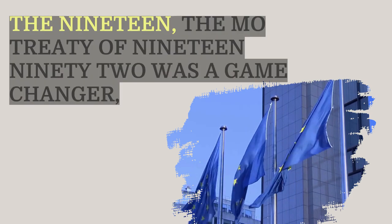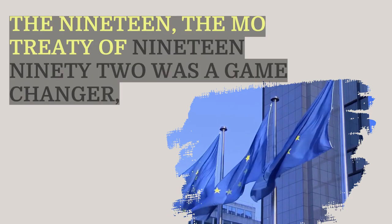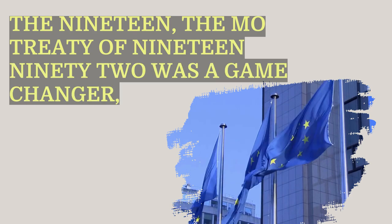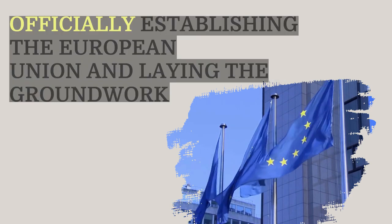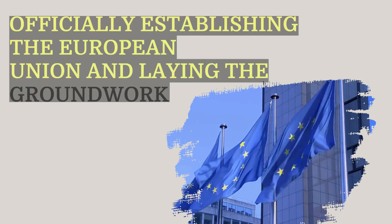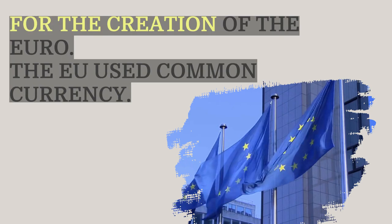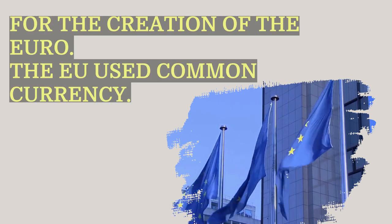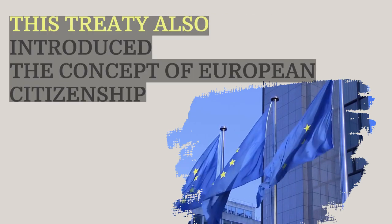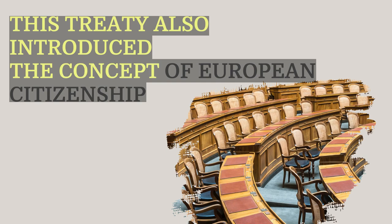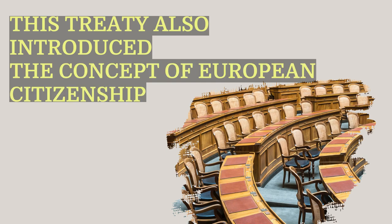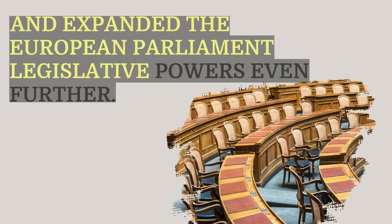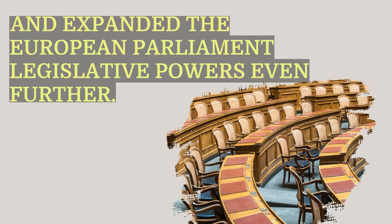In the 1990s, the Maastricht Treaty of 1992 was a game-changer, officially establishing the European Union and laying the groundwork for the creation of the Euro, the EU's common currency. This treaty also introduced the concept of European citizenship and expanded the European Parliament's legislative powers even further.